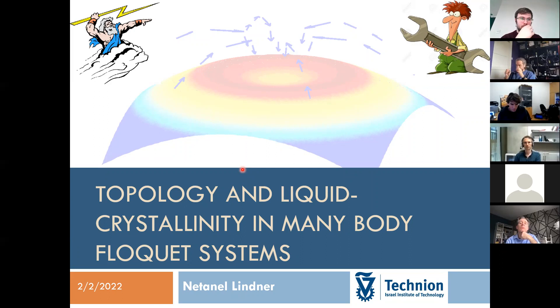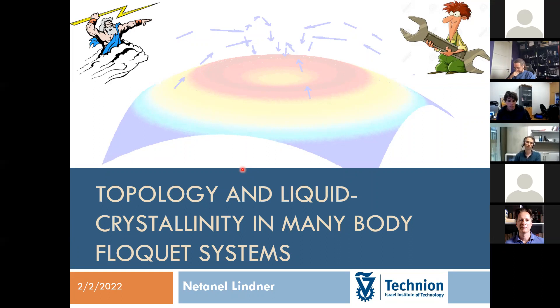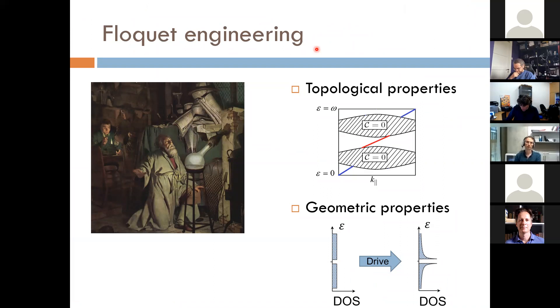I'll show you that a very generic setup can actually lead to both topological phases but also to correlated phases which have some interesting ferromagnetic nematic order parameters. I think this shows that there's a lot of room to find new phases of matter. The phases I'm going to discuss are mostly unique to Floquet systems in the sense that they have some feature which is only possible in a time-dependent system.